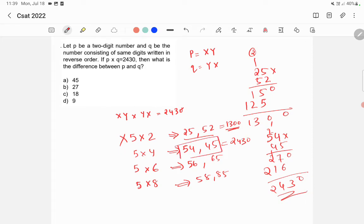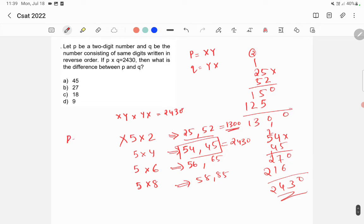So what the question is what is the difference between p and q? So p is equal to 54 and q is equal to 45. So 54 minus 45 is 9. So option D is the correct answer.